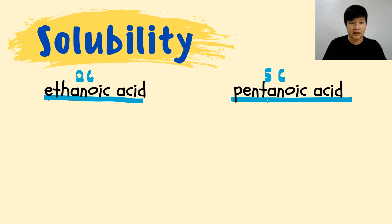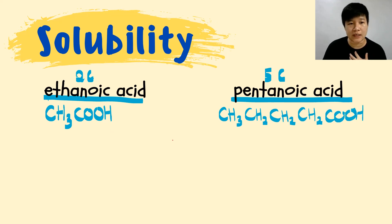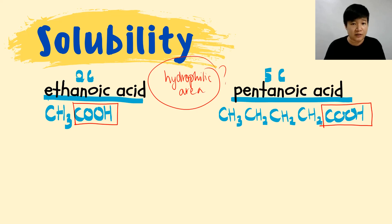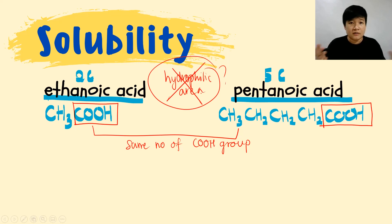Now let's look at another example: ethanoic acid and pentanoic acid — a two-carbon and a five-carbon carboxylic acid respectively. Can we discuss hydrophilic area here? No — because both ethanoic acid and pentanoic acid have only one COOH group each. Since they have the same number of COOH groups, we cannot use hydrophilic area as the distinguishing factor.